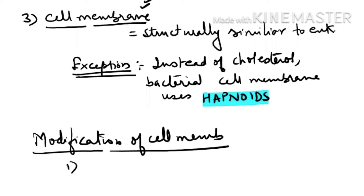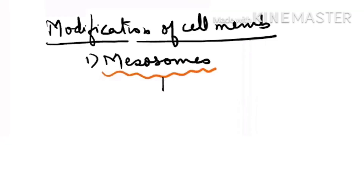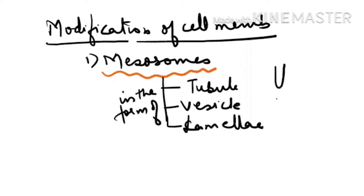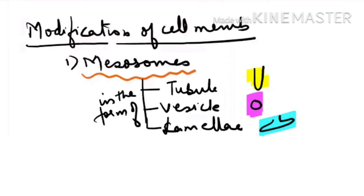The next topic is modifications of the cell membrane. The first modification is mesosomes. Mesosomes can be in the form of tubules, vesicles, or lamellar form. Tubule means a tube-like projection, vesicle means a rounded form, and lamellar means a flat form.